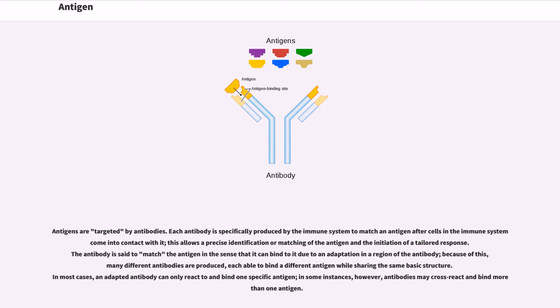Each able to bind a different antigen while sharing the same basic structure. In most cases, an adapted antibody can only react to and bind one specific antigen. In some instances, however, antibodies may cross-react and bind more than one antigen.